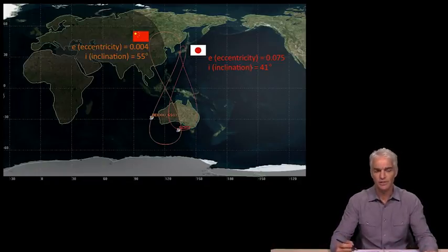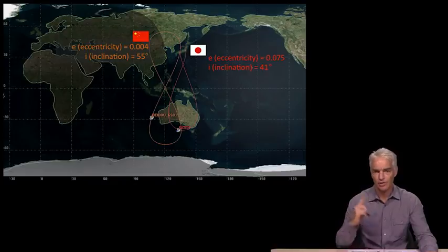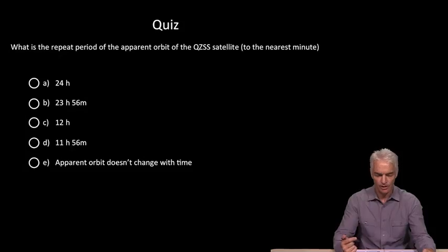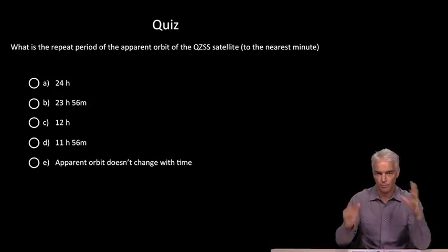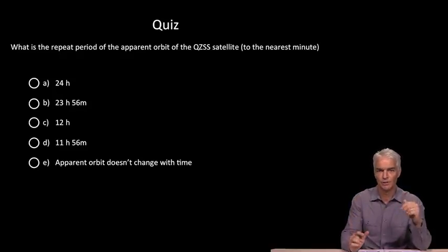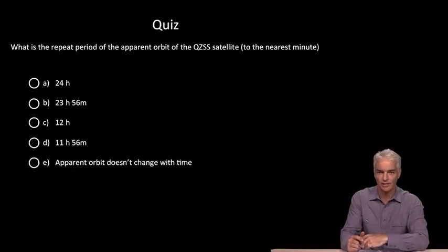So with either of these orbits, we're going to have an orbital period of one sidereal day because they're in sync with the rotation of the Earth. And so we have a little quiz here just to remind you about sidereal days and to ask what is the repeat period of the apparent orbit. From the point of view of somebody standing in one place on the Earth, what is the repeat period for this QZSS satellite to the nearest minute?